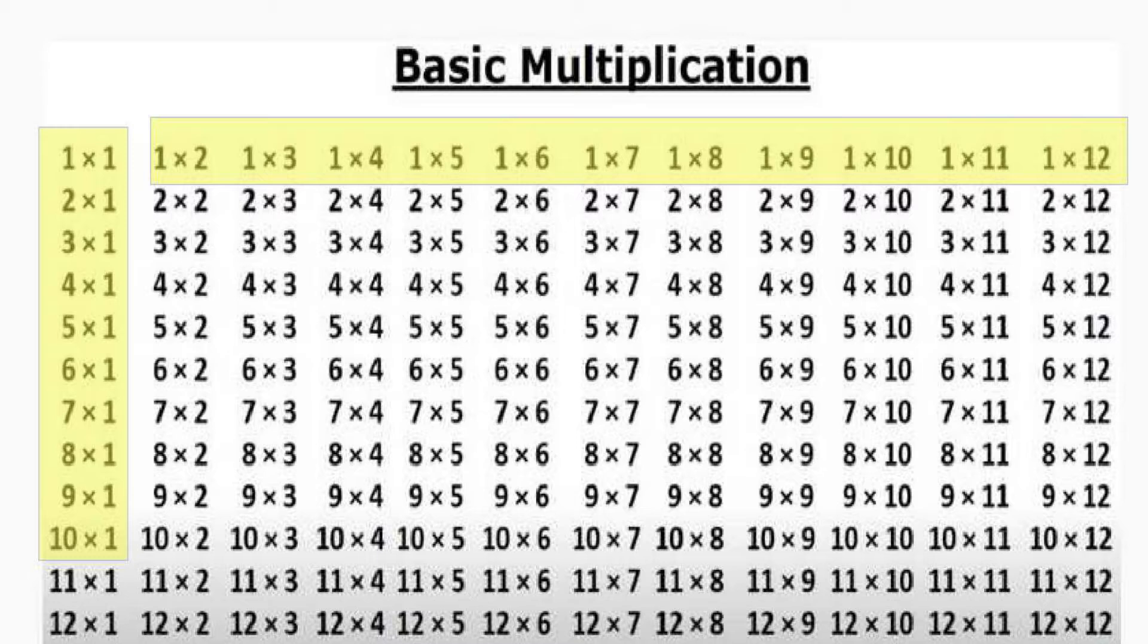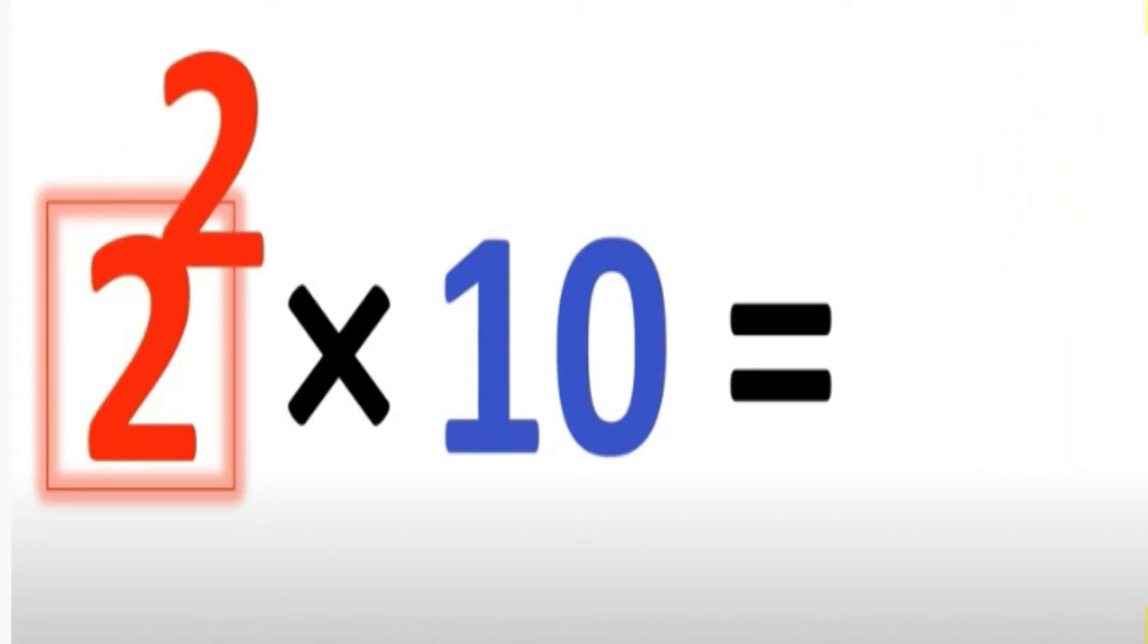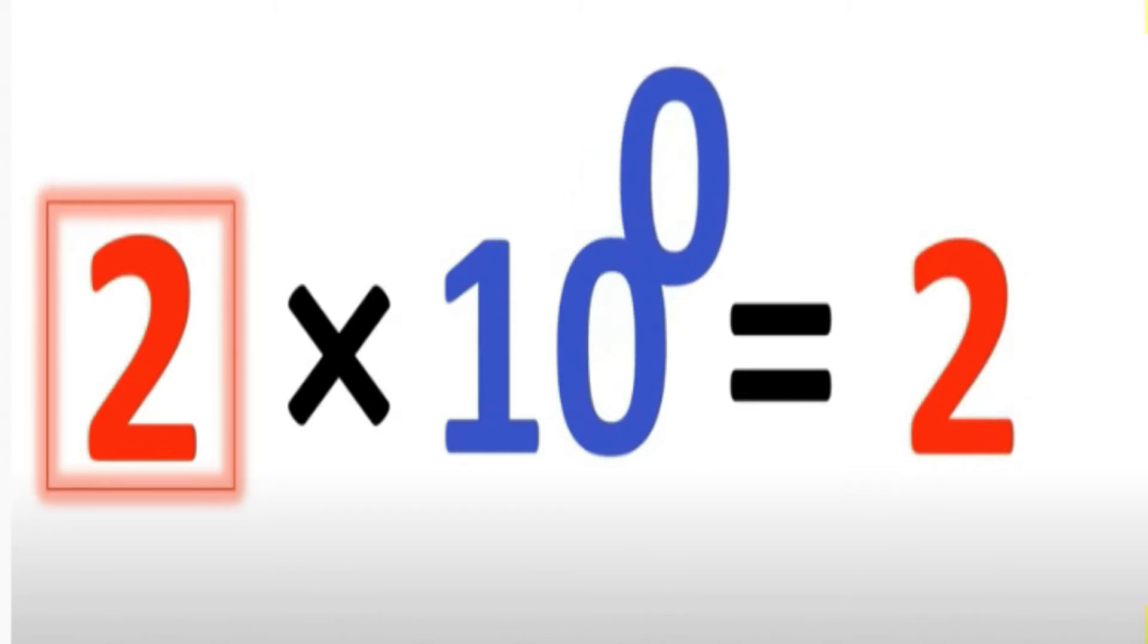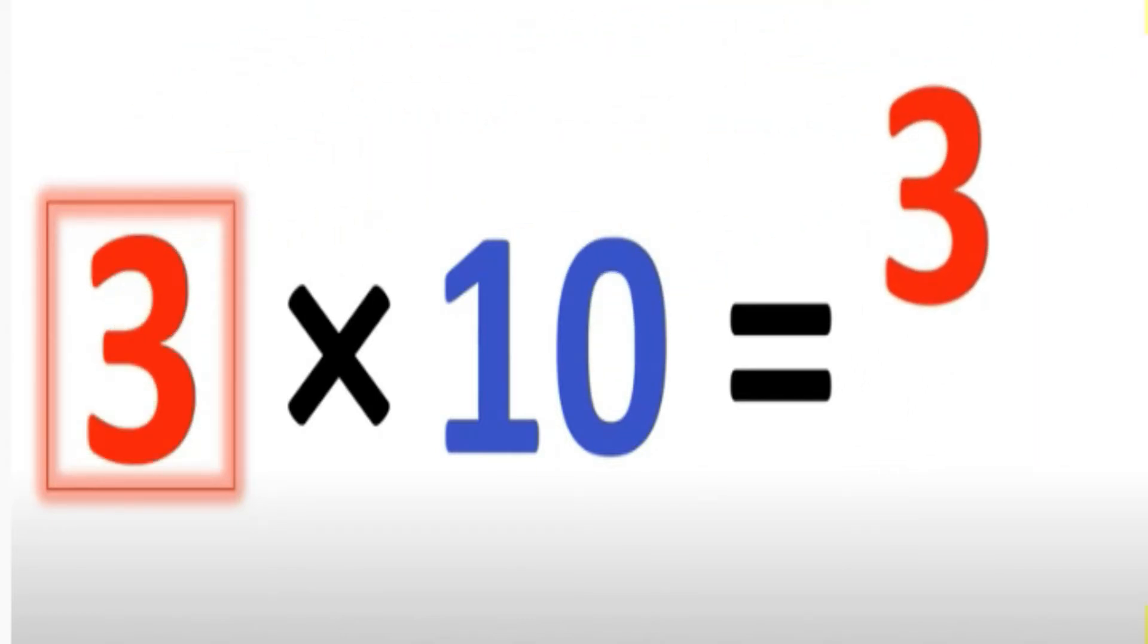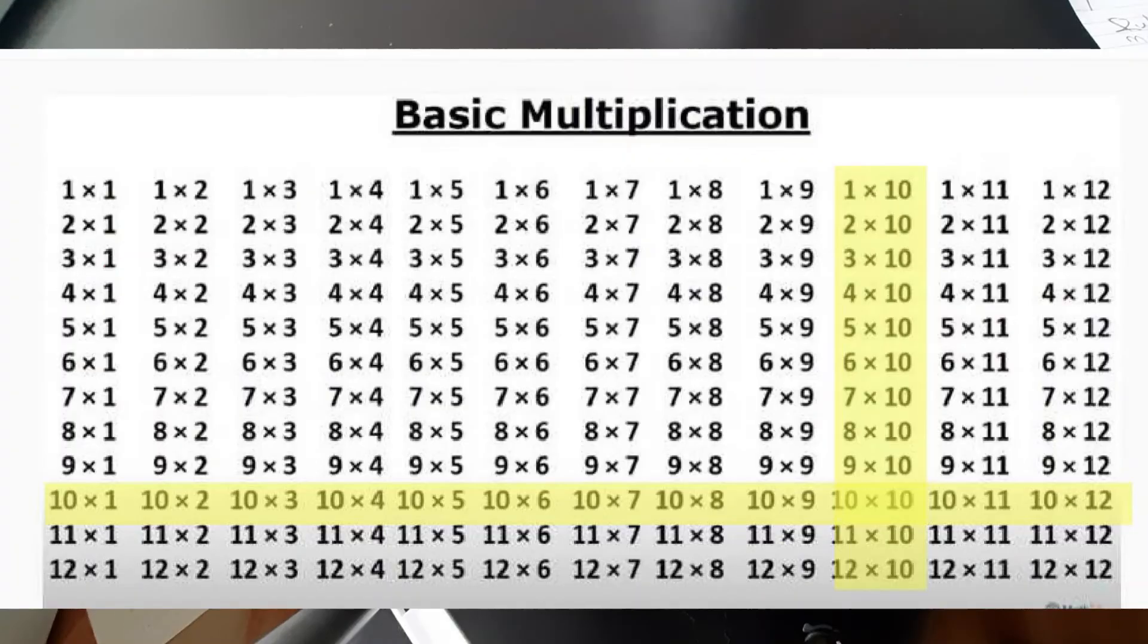Rule number 2. Multiplying by number 10. When it comes to multiplying times 10, 0 is the hero. Take the number you start with and you add a 0. 1 times 10 equals 1 add 0, yeah? 1 times 10 is 10, 2 times 10 is 20, 3 times 10 is 30. You also know the reverse, yeah? 10 times 2, 10 times 3, 10 times 4. So, now with those two simple rules, you now have learned 44 multiplication tables.